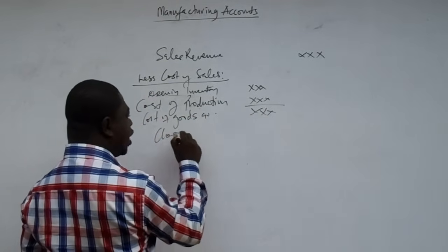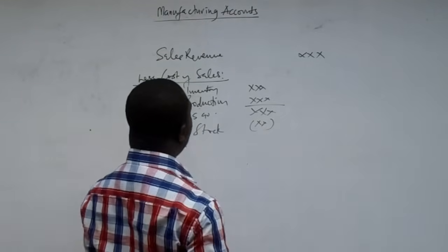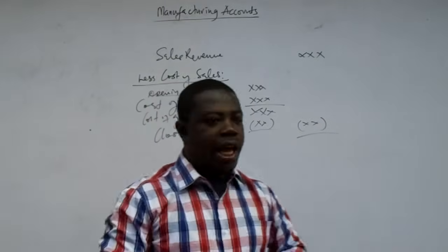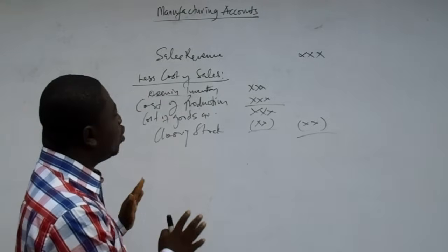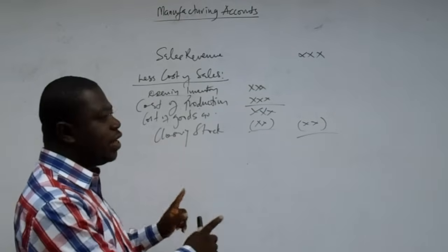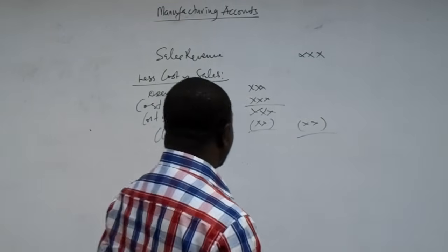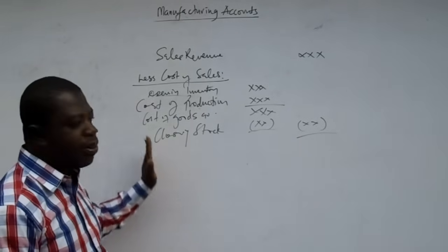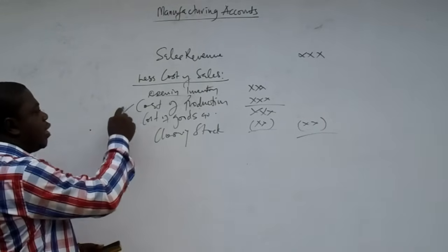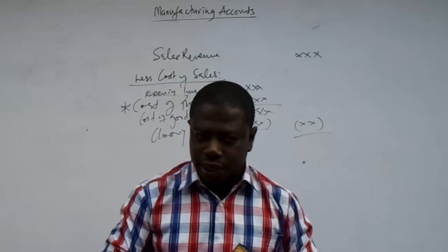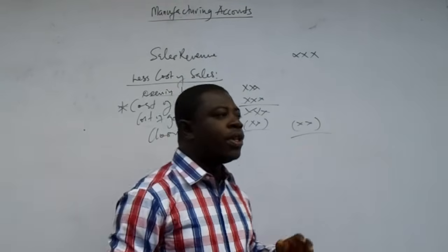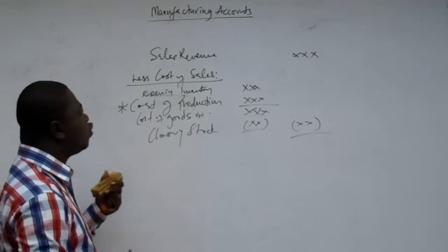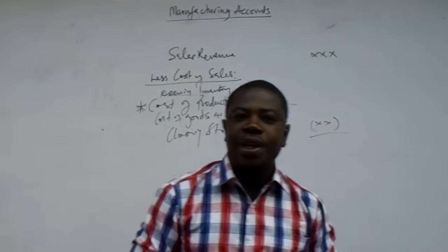You then subtract your closing stock of finished goods before you arrive at your cost of sales, which you compare with the sales revenue to get your gross profit. So the procedure for preparing final accounts for manufacturing organizations is quite different from those involved in buying and selling. The only new element here is the cost of production, so we need to learn how to calculate it. When given a question, you first find your cost of production before you start preparing the income statement.